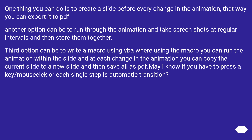Another option is to run through the animation and take screenshots at regular intervals, then store them together. A third option is to write a macro where you run the animation within the slide, and at each change in the animation you copy the current slide to a new slide, then save all as PDF. This depends on whether you need to press a key or mouse click for each step, or if each step is an automatic transition.